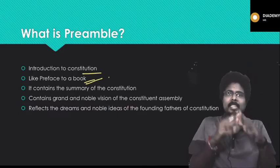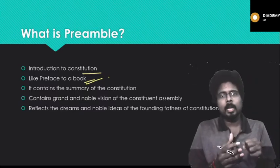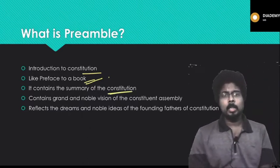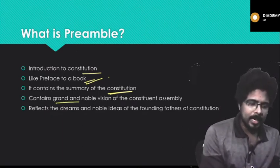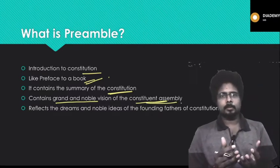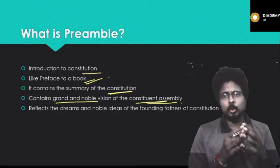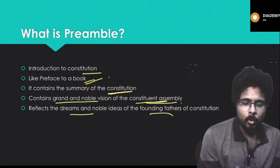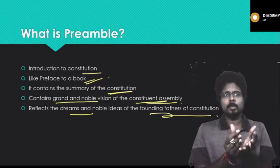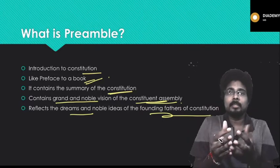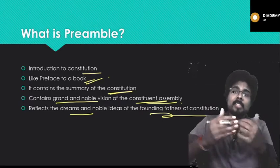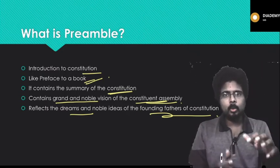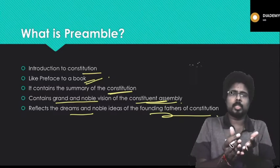The preamble introduces us by telling us what is in the constitution, what are its goals, its nature, and its objectives. The preamble contains the summary of the constitution and also the grand and noble vision of the constituent assembly. If asked which part contains the grand and noble vision of the constituent assembly, the answer is the preamble. The preamble reflects the dreams and noble ideas of the founding fathers, and reading it gives you the crux of the constitution.